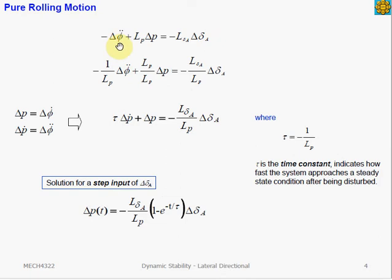The rolling dynamics is described by phi double dot, which is the angular velocity of the roll angle, delta p, which is the change in roll rate, and the input, which is the change in aileron deflection. There are two stability derivatives affecting the rolling motion. The LP stability derivative, which is the roll damping moment, directly affects the root and the time constant of the rolling motion.